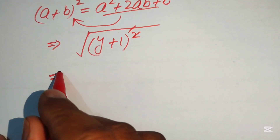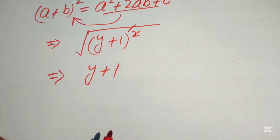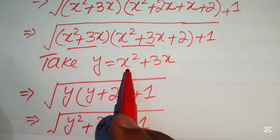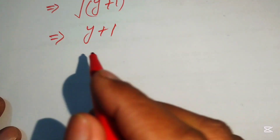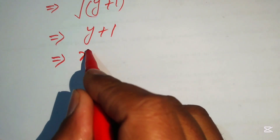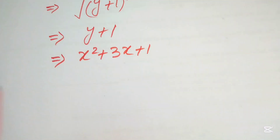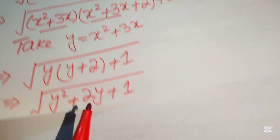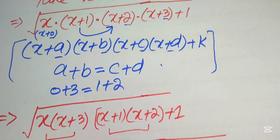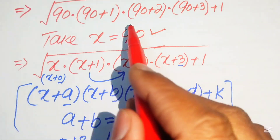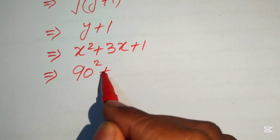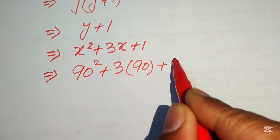The square root and the square cancel, leaving y+1. Now we move backward: we had y equals x²+3x, so substituting gives x²+3x+1. Then we move further back — at the start we took x equals 90, so substituting x equals 90 gives 90² + 3×90 + 1.